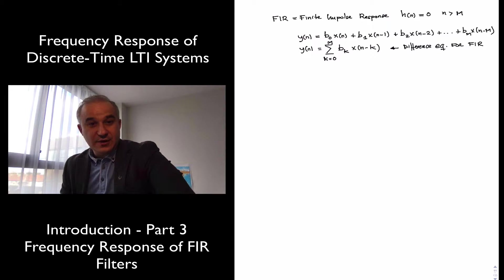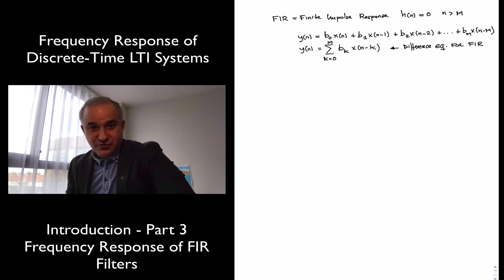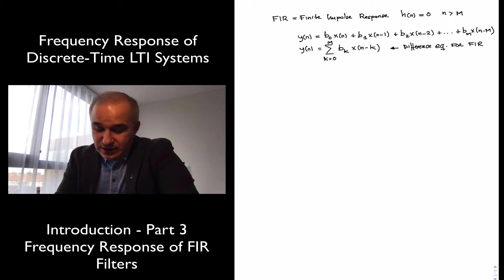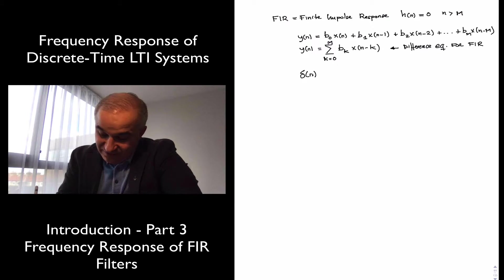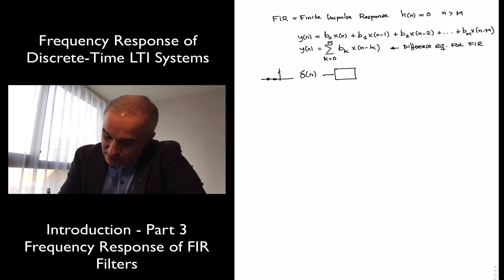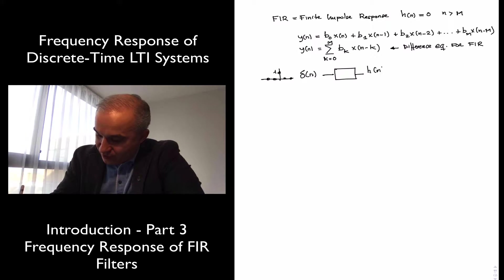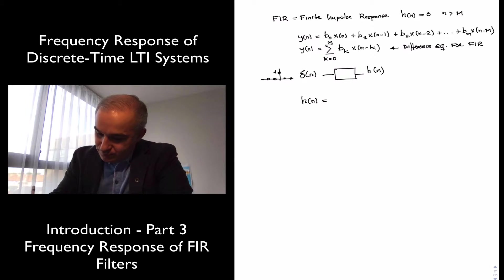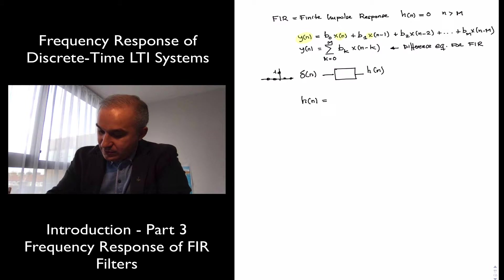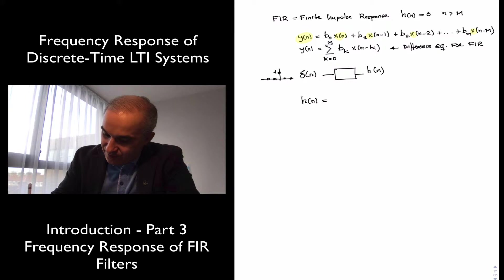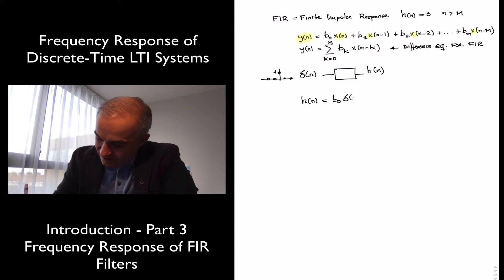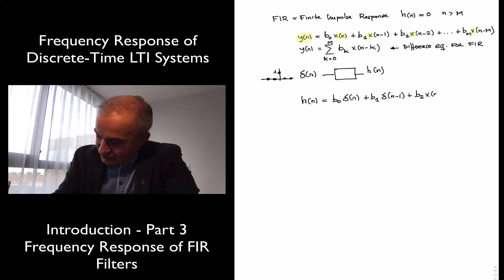So we just need to find the impulse response and then compute the Fourier transform of it. How do we find the impulse response of a system? We put a delta — for a discrete time system, we put a unit delta — and evaluate what the output is. The impulse response H of n equals b0 times delta of n, plus b1 times delta of n minus 1, plus b2 times delta of n minus 2, and so on.